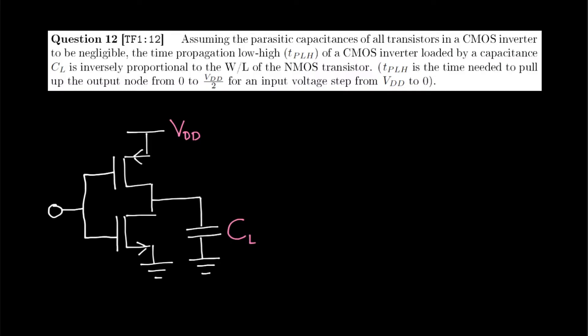This video will discuss the solution to question 12, which is a true-false statement that goes as follows: assuming the parasitic capacitances of all transistors in a CMOS inverter to be negligible, the propagation time low-high TPLH of a CMOS inverter loaded by a capacitance CL is inversely proportional to the aspect ratio of the NMOS transistor.